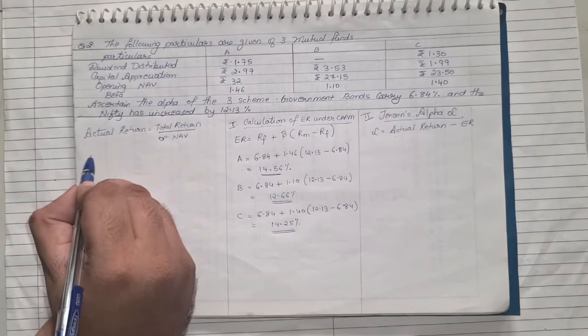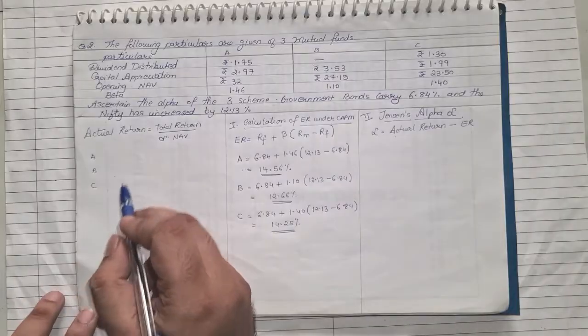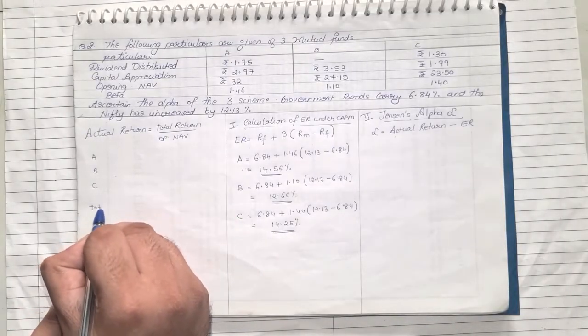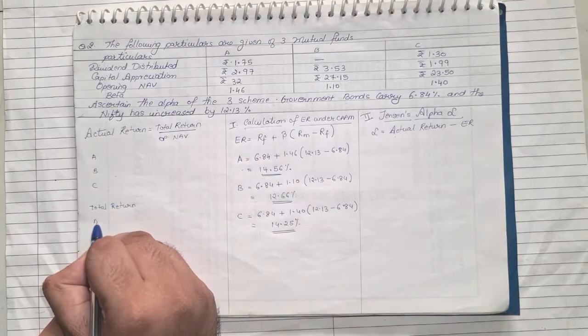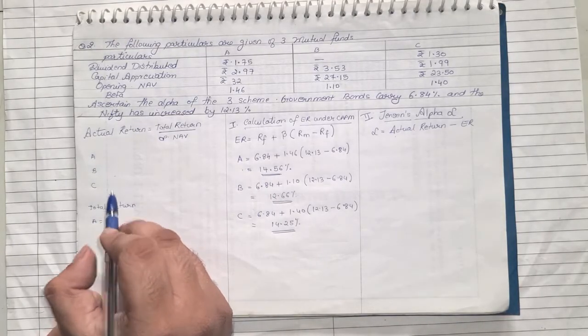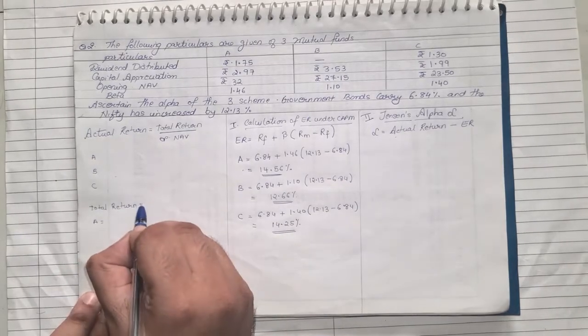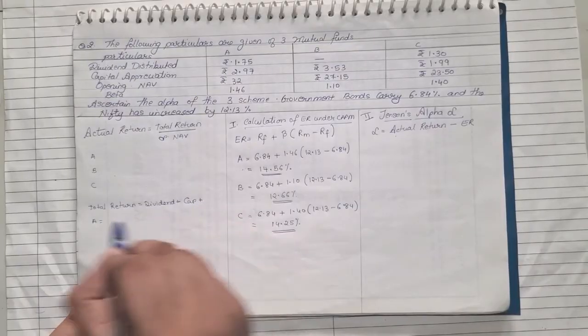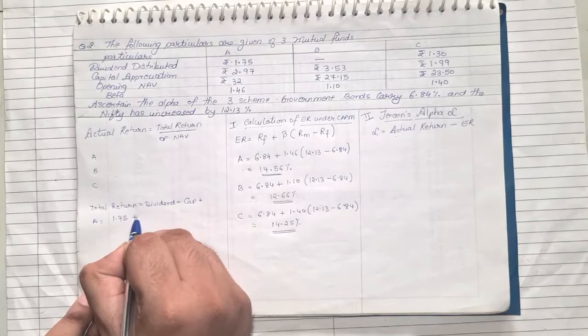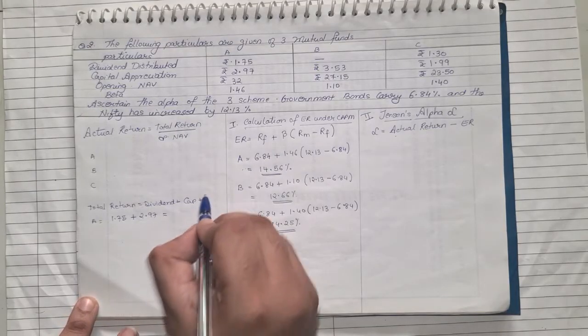Now I'll write here actual return of A, B, and C. I'll leave a little space so we can solve it and get those values. Now I need to find the total return. Total return's formula for scheme A: it's nothing but dividend which has been distributed plus the capital which has been appreciated. So for A it was 1.75 plus 2.97, that is dividend plus capital appreciation. You add up, which comes to approximately rupees 4.72.